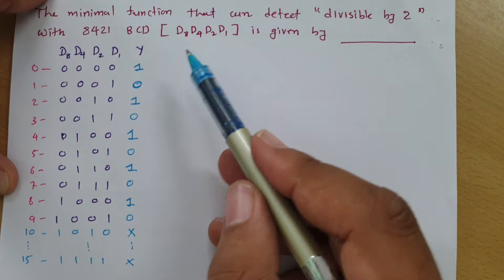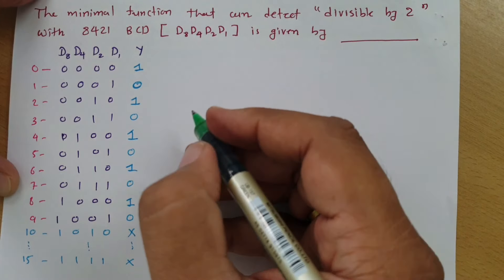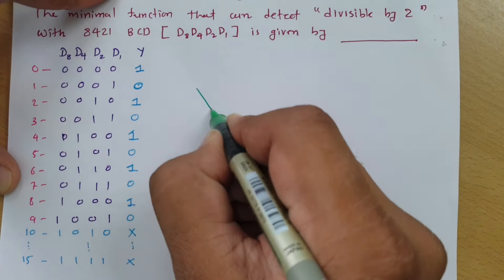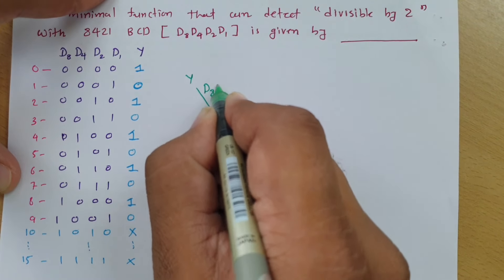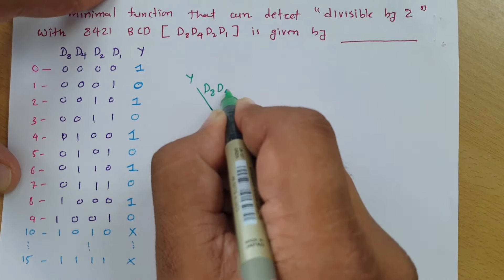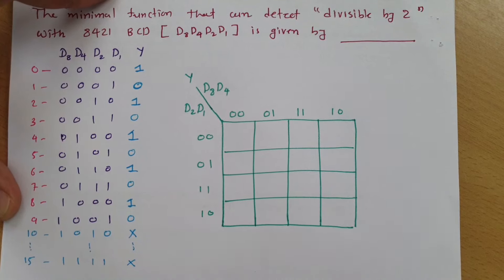This is the relation we have. In combinational circuit design, all we need to do is solve this using a Karnaugh map. Here I have output y, and I'm writing d8, d4 on one axis and d2, d1 on the other, and I need to solve this K-map. I need to identify the locations.